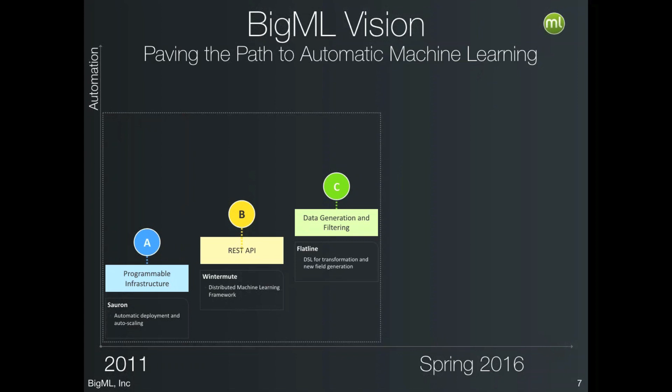To handle real-world data, we created a domain-specific language called Flatline, which can be used to clean, filter, and transform data quickly and efficiently. This ability to do programmatic feature engineering is very powerful. With those three components, it's already possible with BigML to create automated workflows and write code that tunes models, for example by programming against the API in Python.